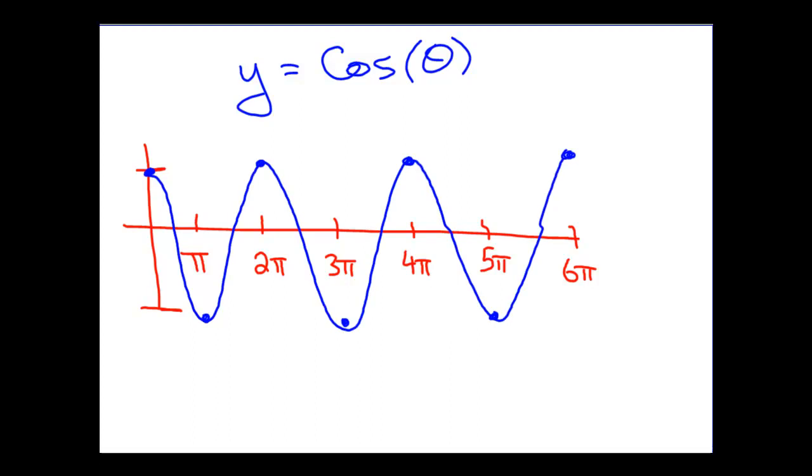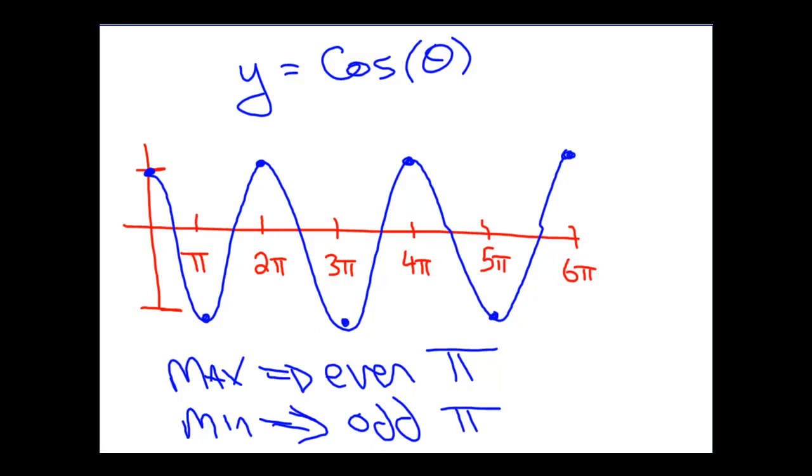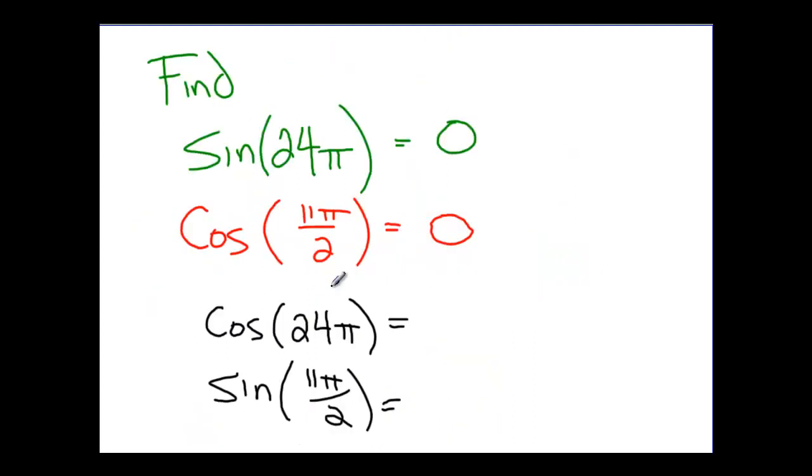And so you can see that we have a maximum at even π values, 2π, 4π, 6π. And we have minimums at odd π values, at π, 3π, 5π, 7π, and so on. So if we want to answer our question now and determine what the cosine is doing at 24π, cosine has a maximum. Cosine has a maximum at 24π, because it's an even number of π, and cosine has its maximum at 1.